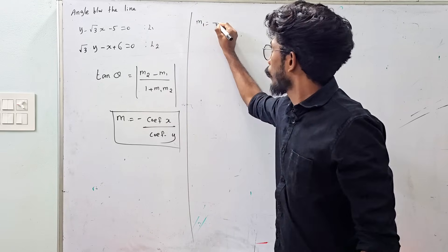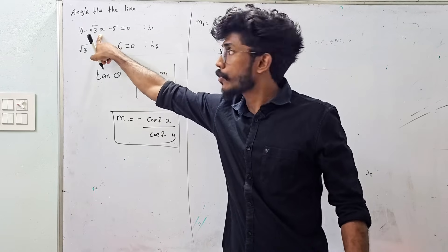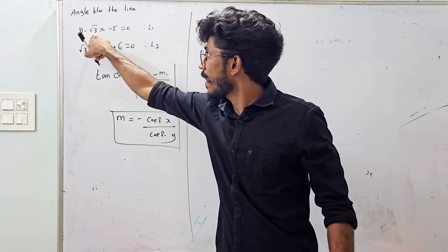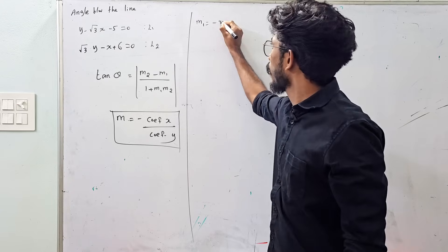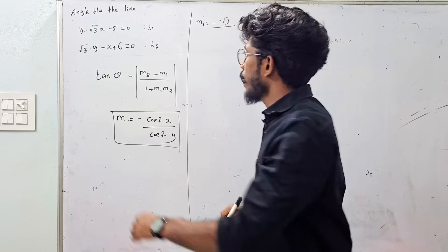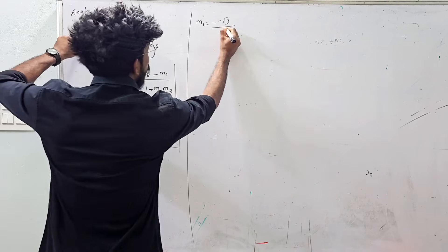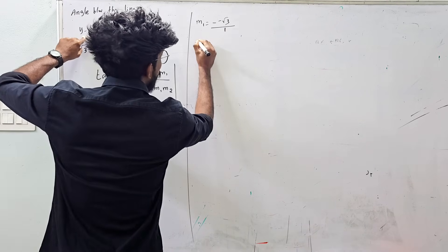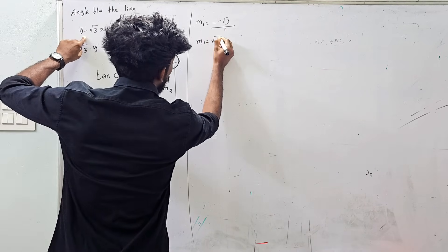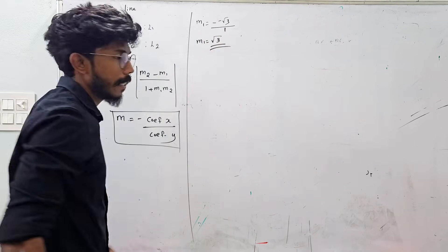m1 equals minus of the coefficient of x, which is minus root 3, divided by the coefficient of y, which is 1. So minus minus gives plus, and m1 equals root 3. Clear?